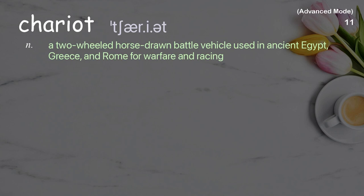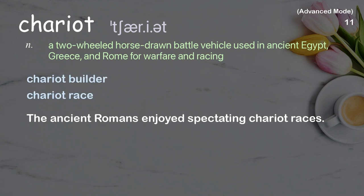Chariot: a two-wheeled horse-drawn battle vehicle used in ancient Egypt, Greece, and Rome for warfare and racing. Examples: chariot builder, chariot race. The ancient Romans enjoyed spectating chariot races.